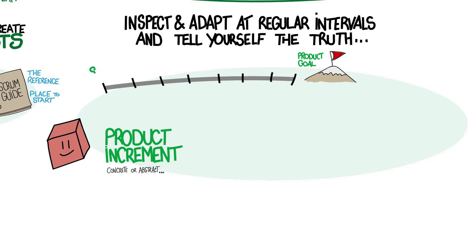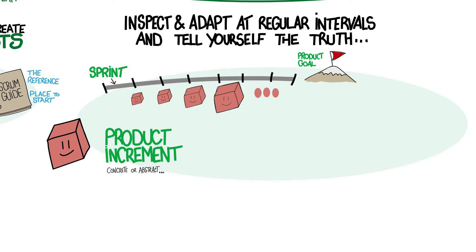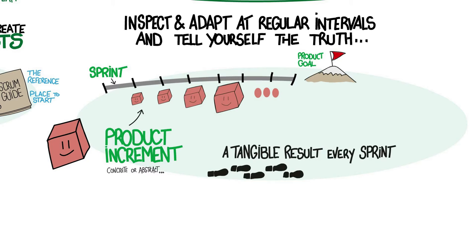Scrum works in short iterations called sprints. At least once per sprint, the Scrum Team produces a new version of the product with a few new or upgraded elements. Scrum calls this the product increment, but I like to call it a tangible result. Each sprint produces a tangible result that supports the overall goal — something you can use, sell, or test in real life, and most importantly, something the Scrum Team can review together with its stakeholders.